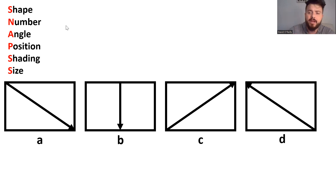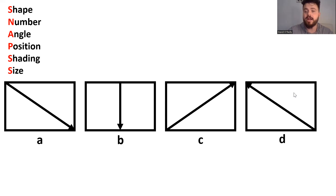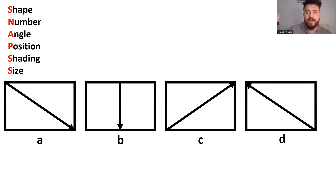We move on to the next factor: number — the number of things in each object. In a, we've got a shape and an arrow, which is two things. Two things in b, two things in c, two things in d. So we've got two things in each object and therefore we can't do anything with number either.